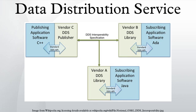Publisher is an object responsible for the actual dissemination of publications. Data Writer sets the data values to be published under a given topic. Subscriber is an object responsible for the actual reception of data disseminated by publishers. Data Reader allows the application to declare the data it wishes to receive and to access the data received by the attached subscriber.